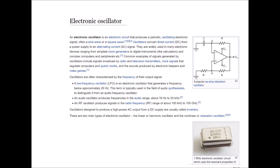Electronic oscillator. An electronic oscillator is an electronic circuit that produces a periodic oscillating electronic signal, often a sine wave or a square wave. Oscillators convert direct current from a power supply to an alternating current, AC signal. They are widely used in many electronic devices, ranging from simplest clock generators to digital instruments like calculators, and complex computers and peripherals. Common examples of signals generated by oscillators include signals broadcast by radio and television transmitters, clock signals that regulate computers, and quartz clocks, and the sounds produced by electronic beepers and video games.